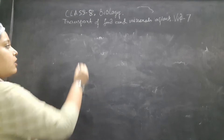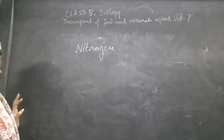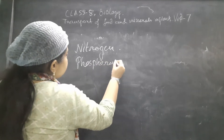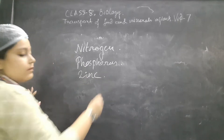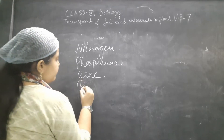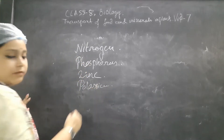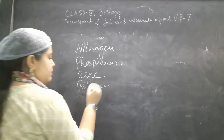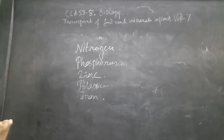The first is nitrogen deficiency. Then we will go over phosphorus deficiency. The next is about zinc deficiency. Then also about potassium deficiency. And finally about iron deficiency. So these are the selected 5 mineral deficiency diseases we will discuss.